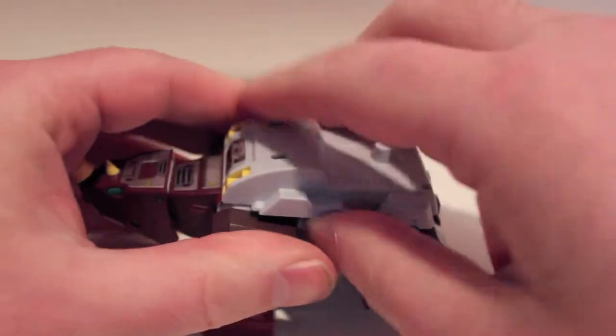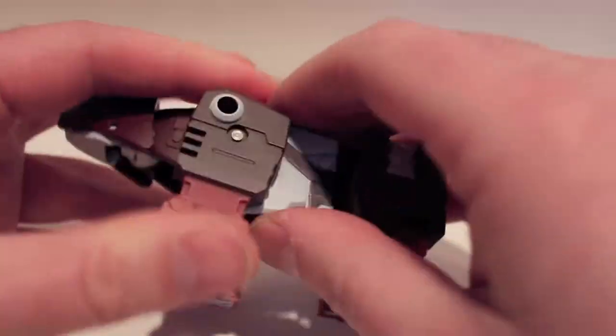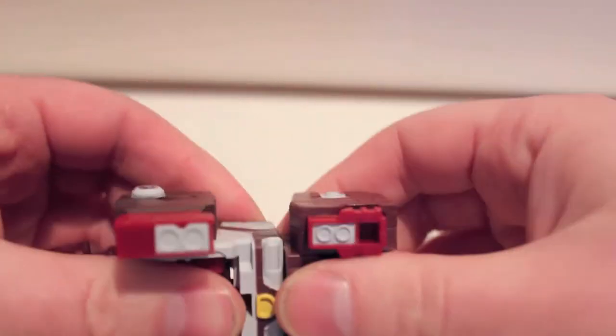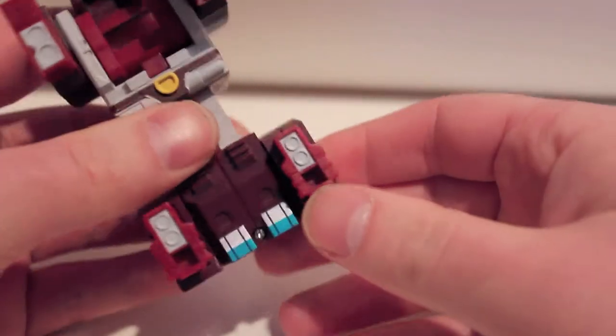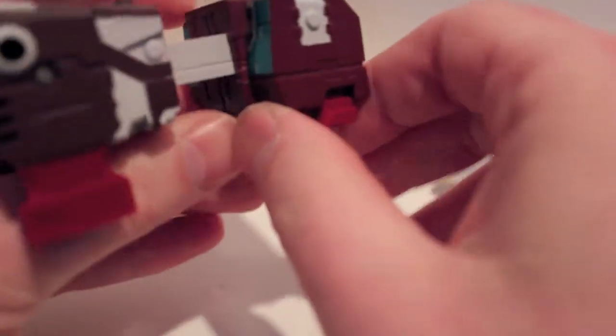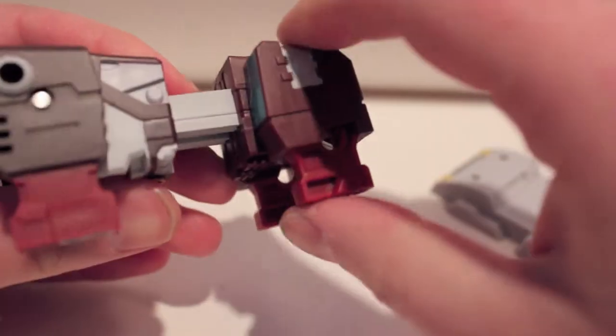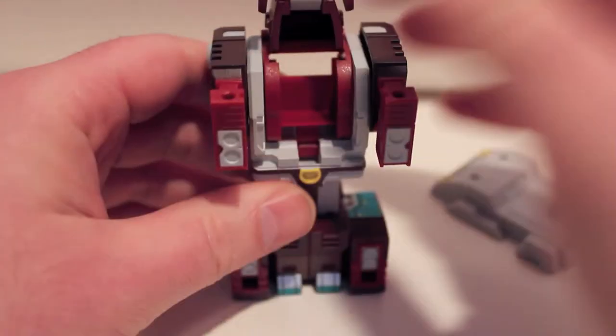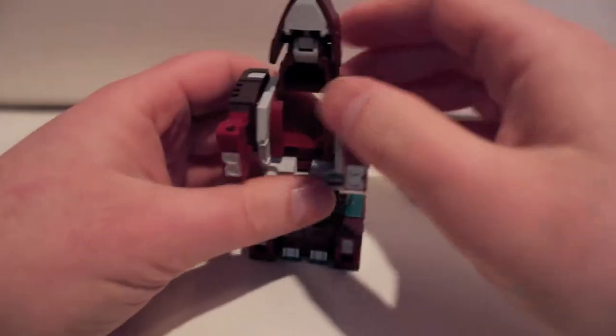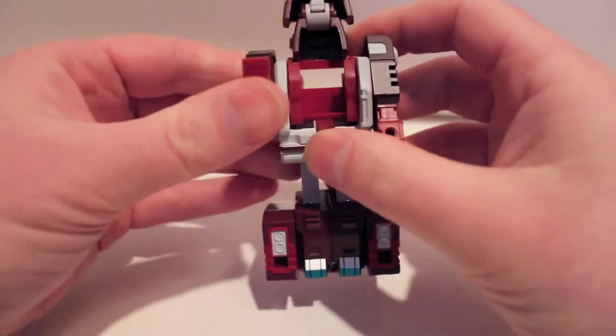So yeah, transformation. Pop off the shield, extend out the legs. Now what's really cool is these legs - this one's a little bit looser than the other one - but these legs just collapse in on themselves and you got little like missile pods or whatever. And then the arms just fold down.